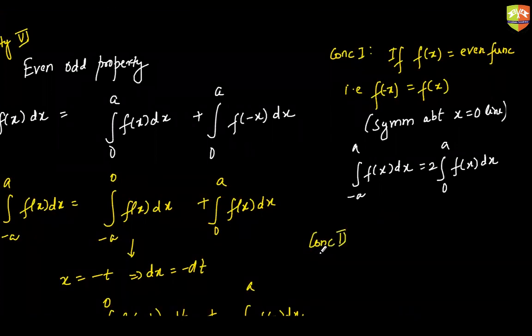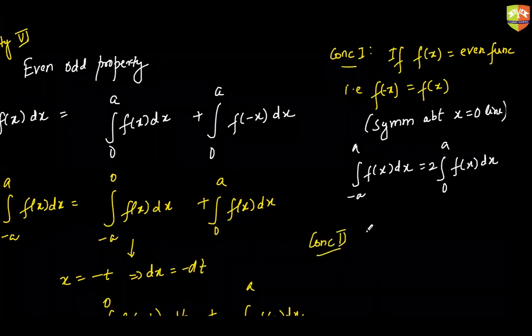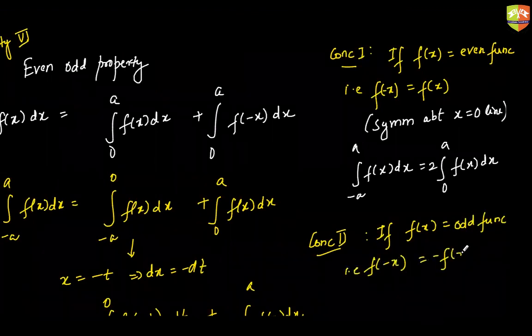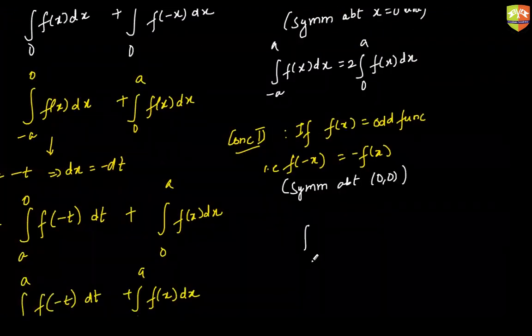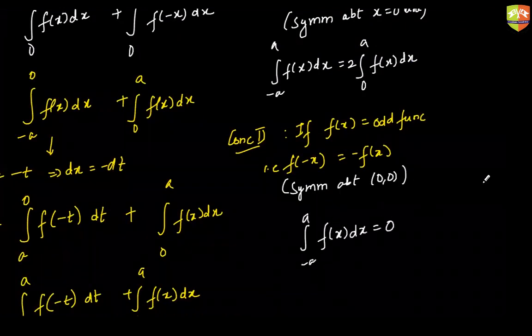Conclusion number 2. If there is rotation symmetry then 0. Yes. If f of x is an odd function, that means f of minus x is negative of f of x. That means the graph is symmetrical about 0, 0. Then what will happen? Integral from minus a to a f of x dx will become 0.